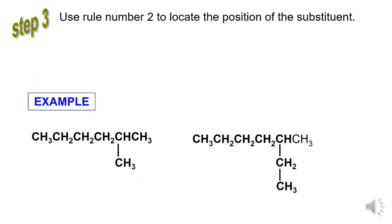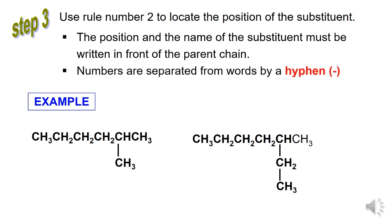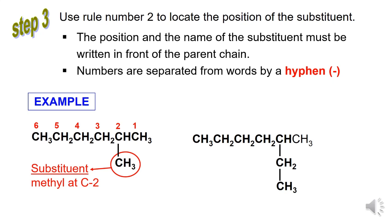Step 3: Use rule number 2 to locate the position of the substituent. The position and the name of the substituent must be written in front of the parent chain. Numbers are separated from words by a dash. Example: this structure has one substituent group, CH3, and the parent chain consists of 6 carbons. The name is hexane. One substituent group, CH3, is bonded to carbon number 2 and the name is called methyl. So the IUPAC name is 2-methyl-hexane.